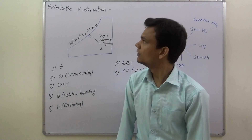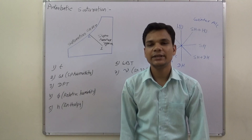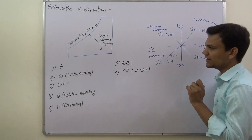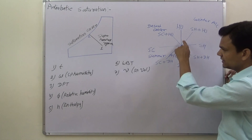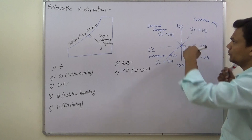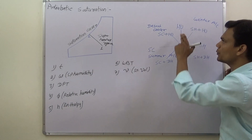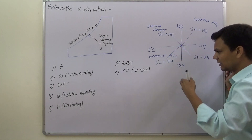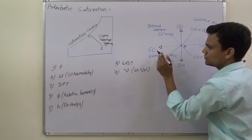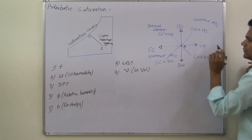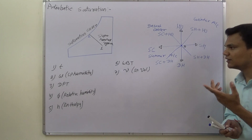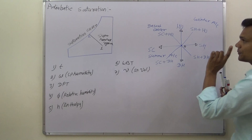Let's understand the term adiabatic saturation. If we take a psychrometric chart and draw the various processes: the vertical line above point O shows humidification, the direction down-right shows dehumidification, direction towards left shows sensible cooling, direction towards right shows sensible heating. We can also combine these: sensible heating plus humidification, sensible heating plus dehumidification, sensible cooling plus dehumidification, etc.